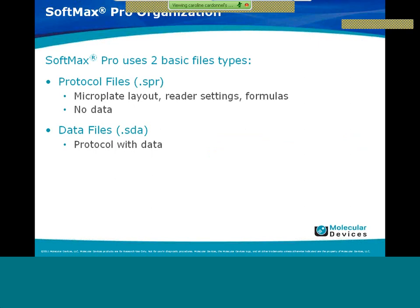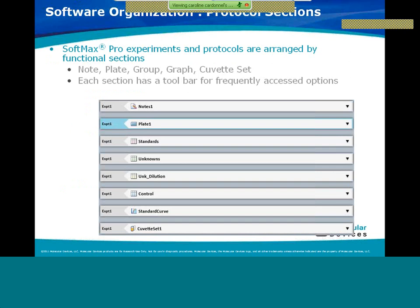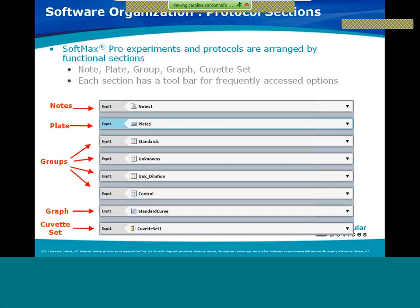SoftMax Pro uses two types of files: protocol files (SPR files) which contain the microplate layout, reader settings, and formulas but no data; and data files with the extension SDA, which are created as soon as data is present. SoftMax Pro 6 is compatible with all versions from 4.3 to 5.4. Protocols are organized by functional sections: note sections, plate sections, group sections, graph sections, and cuvette sets, each with a toolbar for frequently accessed options.